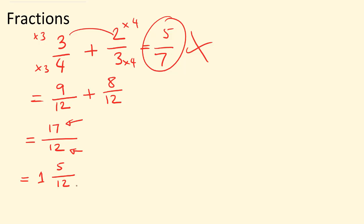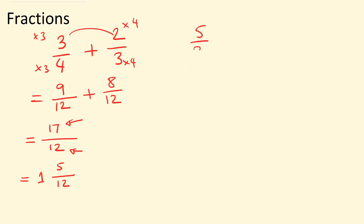Let's have a look at a subtraction, and we are subtracting a quarter from it. We can see that the denominators are different. On this one it's slightly different to the one we did before. We can see that 8 and 4, the two denominators, where 4 is a multiple of 8. So rather than multiplying this one by 8 and this one by 4, we can just multiply the quarter — numerator and denominator — by 2, and in that way we can make the denominator into 8.